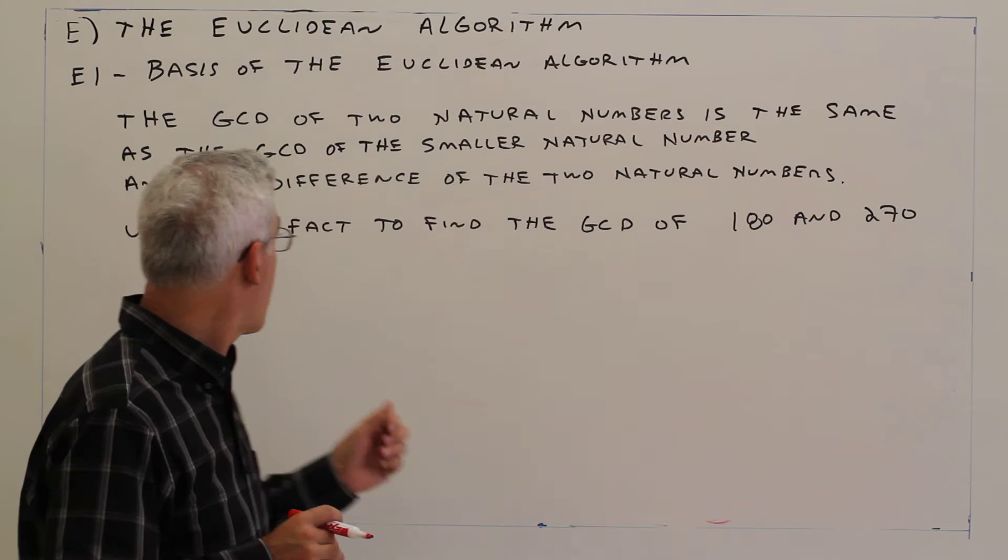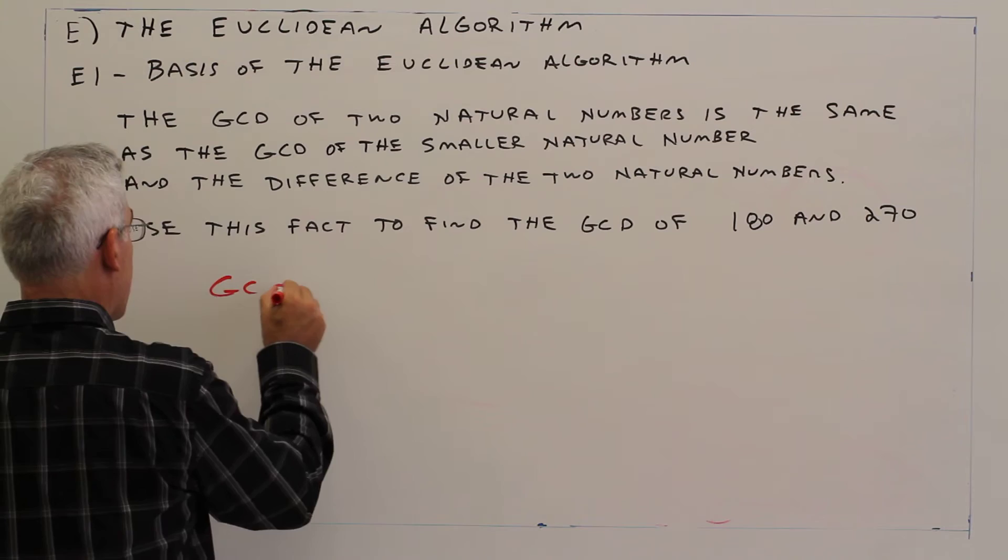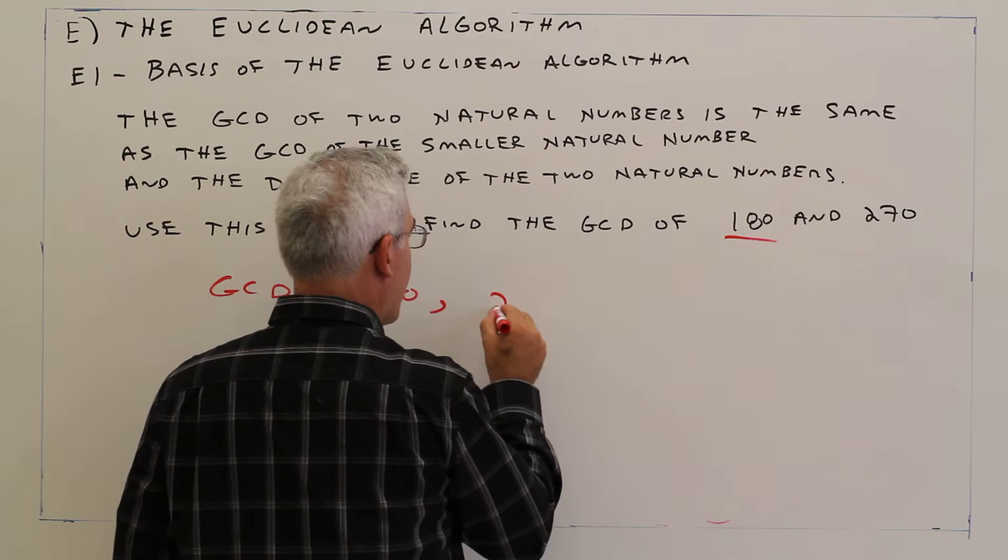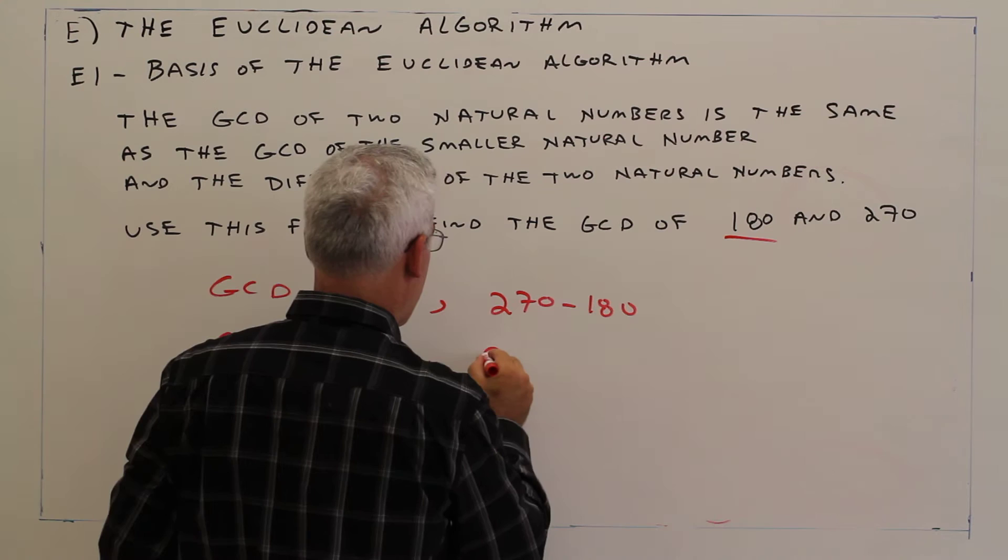So here's the problem. Use this fact to find the GCD of 180 and 270. Well, that's going to be the same as the GCD, the smaller one, which is 180, and their difference, 270 minus 180, which is the GCD of 180 and 90.